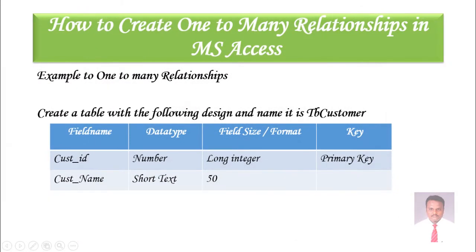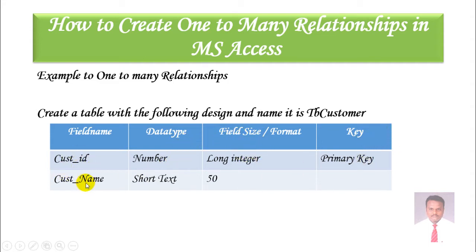Now we are going to create two tables to explain one-to-many relationship. The first table will be named tbCustomer with the following design: field name Customer ID, data type Number, field size Long Integer, and it is the primary key. The second field is Customer Name, data type Short Text, field size 50.